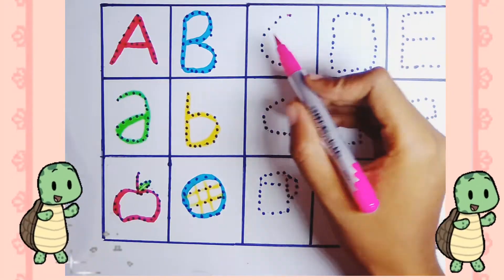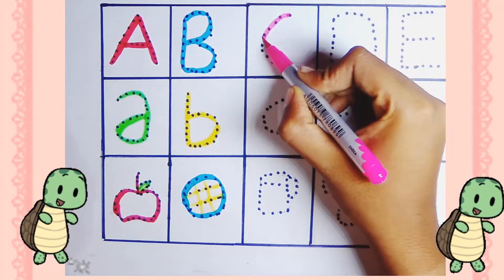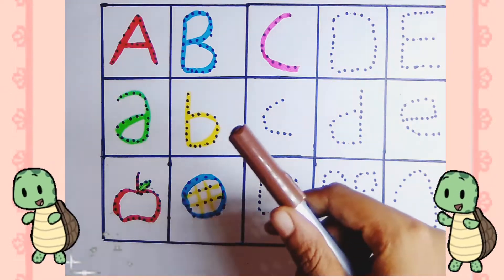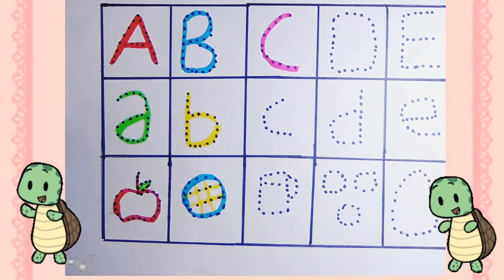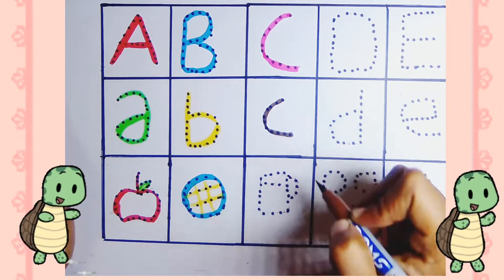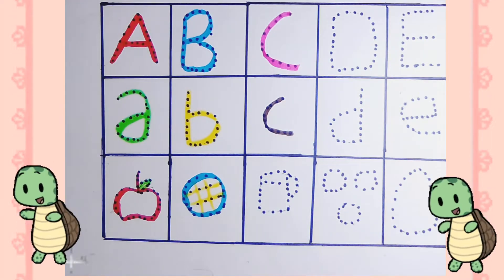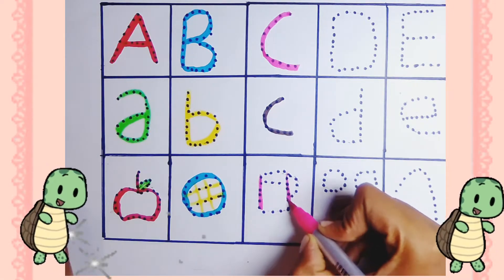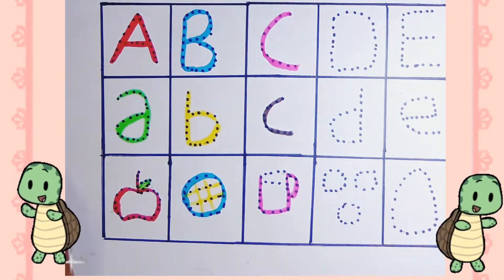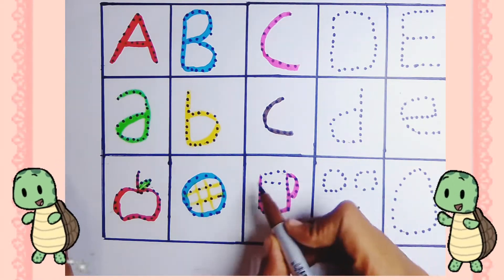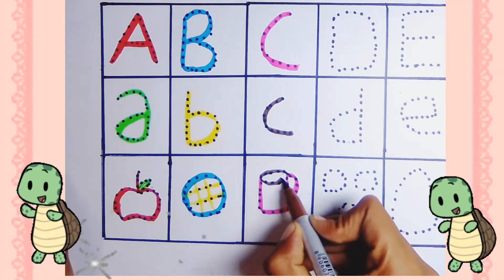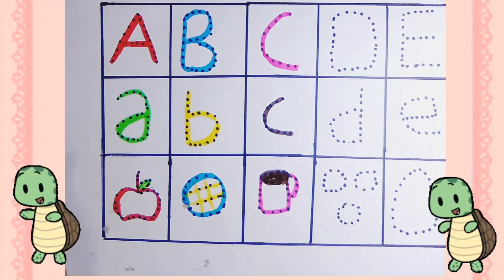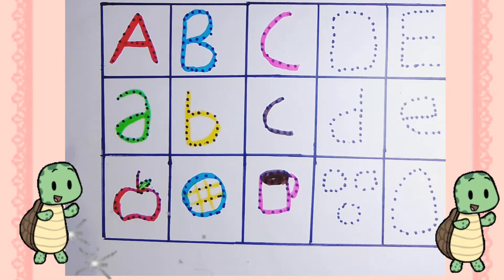A, B, C, D, E, F, G, H, I, J, K, L, M, N, O, P, Q, R, S, T, U, V, W, X, Y, and Z. Now you know your ABCs, next time won't you sing with me.